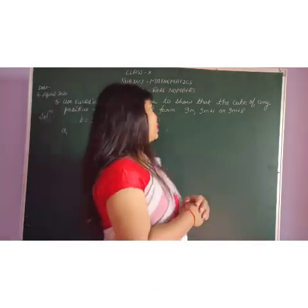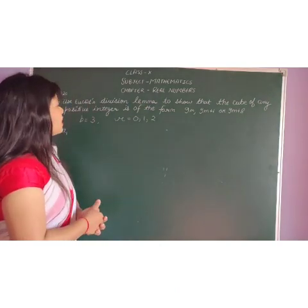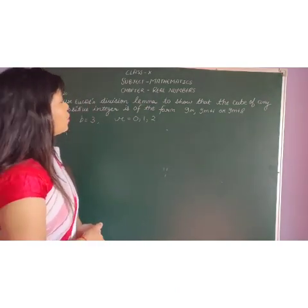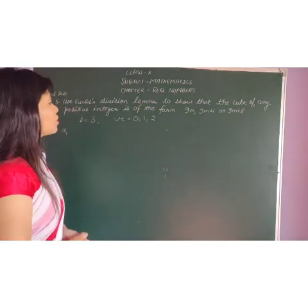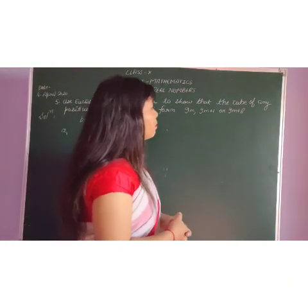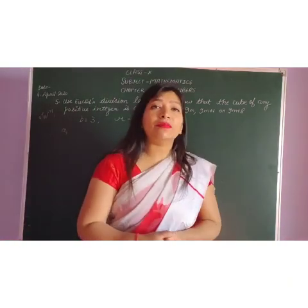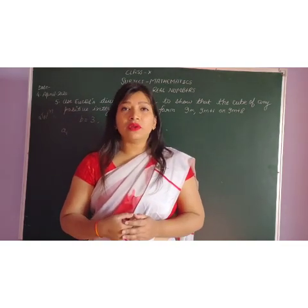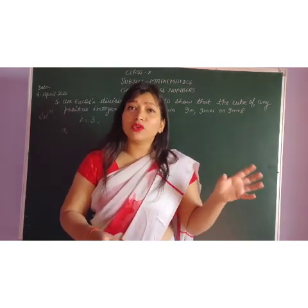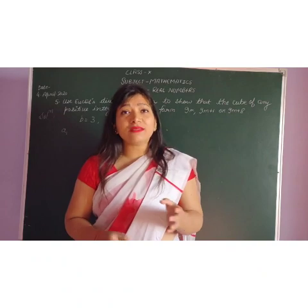So here let's take the question: use Euclid division lemma to show that the cube of any positive integer is of the form 9M, 9M plus 1, or 9M plus 8. In our previous question, what we were doing, whatever number we have with Q or M, we are taking it as B.